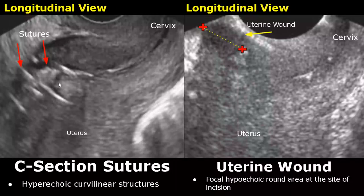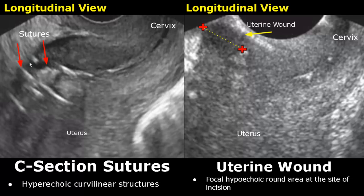These are longitudinal transvaginal images of the uterus after a caesarean section. These curvilinear hyperechoic structures are the sutures, and over here this is a uterine wound. It appears as a focal hypoechoic area at the site of the incision. These appearances are normal after a C-section.